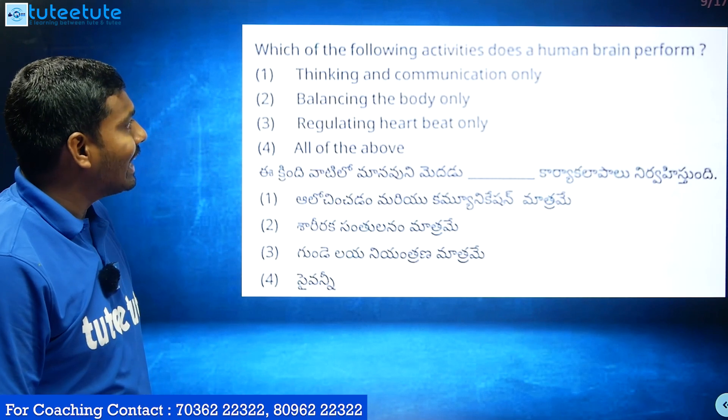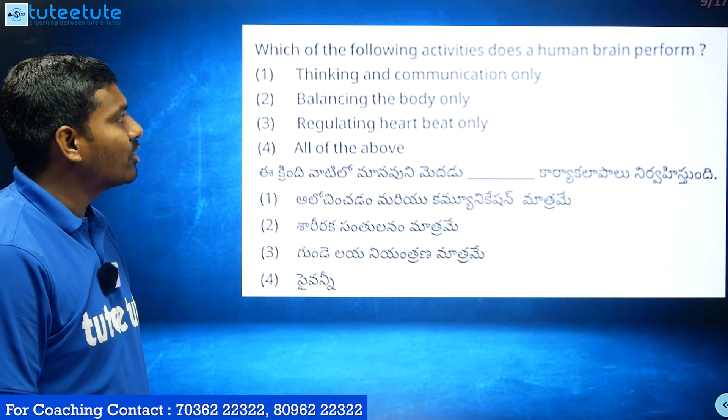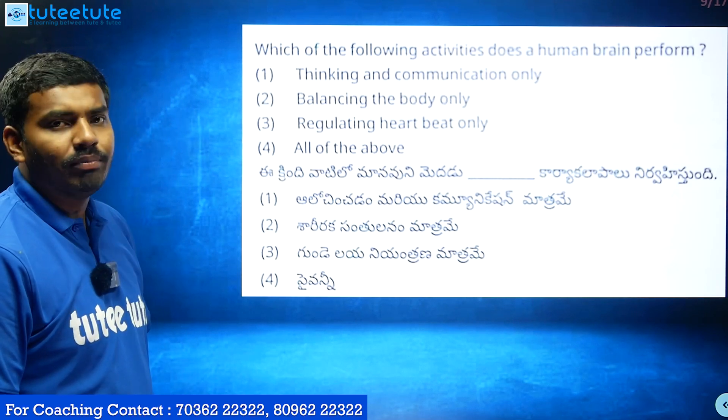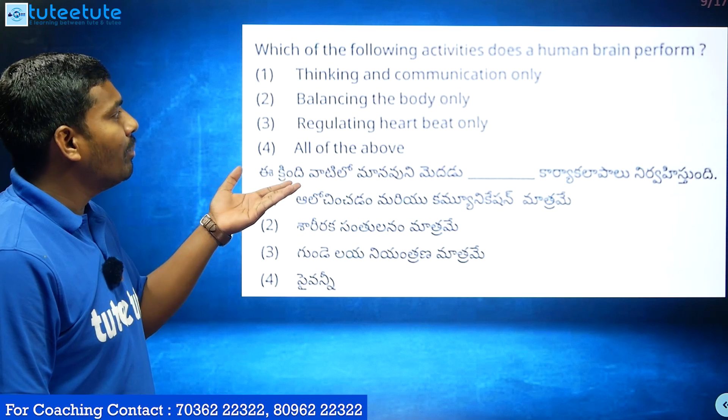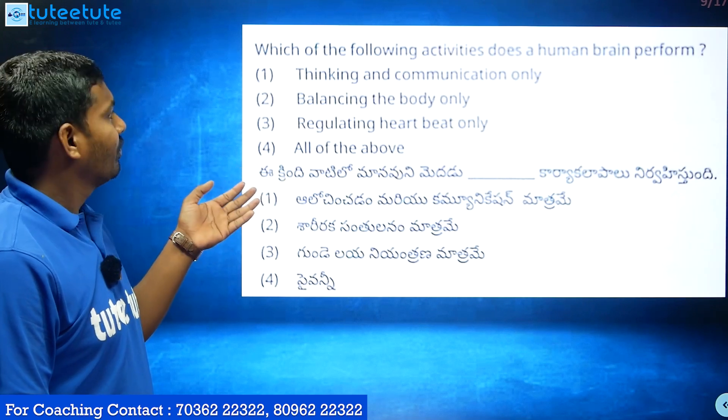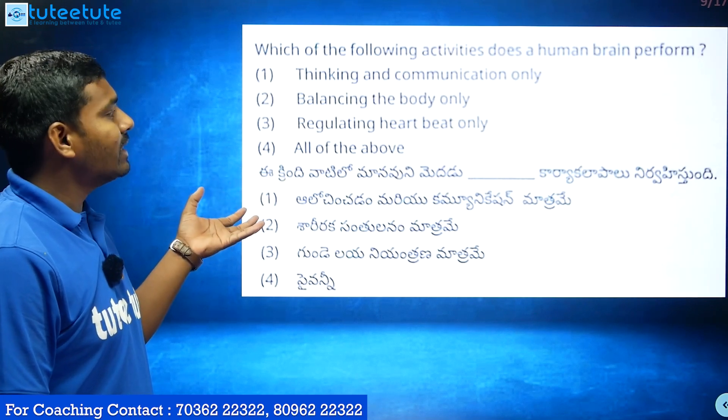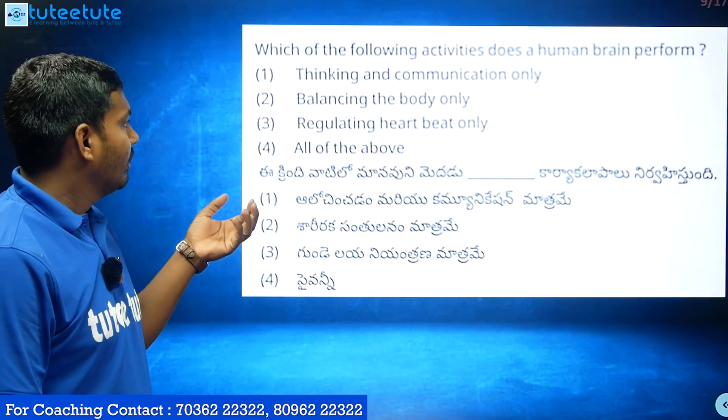Which of the following activities does the human brain perform? The options are: A. Thinking and communication only. B. Balancing the body only.